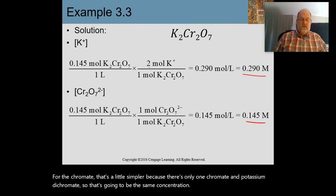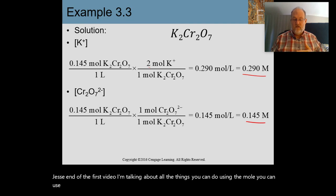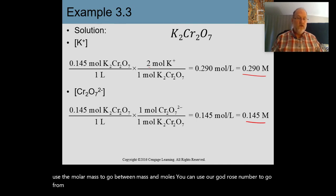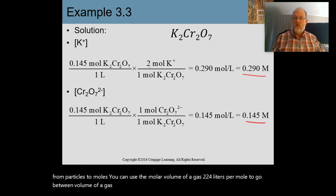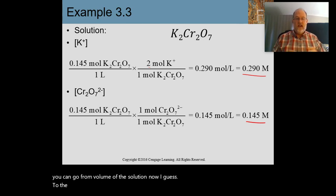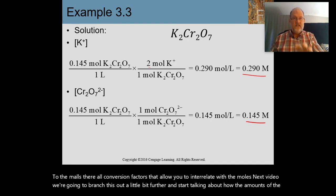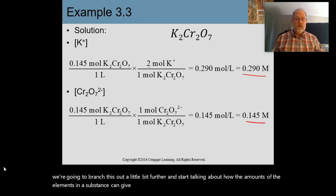That's the end of this first video on the mole. You can use molar mass to go between mass and moles. You can use Avogadro's number to go between particles and moles. You can use the molar volume of a gas — 22.4 L/mol — to go between volume of a gas at STP and moles. And if you have an aqueous solution, you can go from volume of the solution to moles using molarity. They're all conversion factors that interrelate with the mole. Next video, we'll branch out further and talk about how the amounts of elements in a substance can give you the formula. Until next time — toodles.